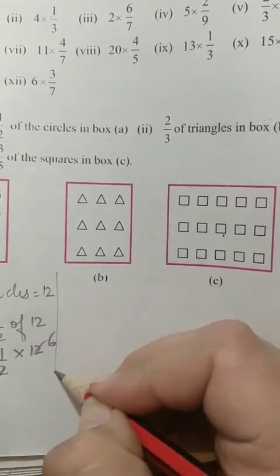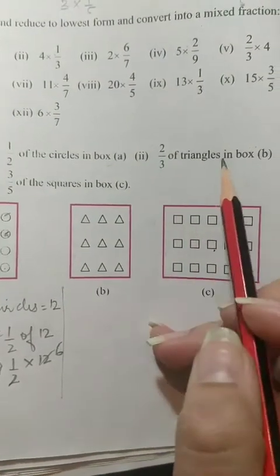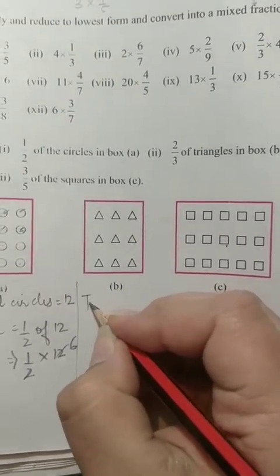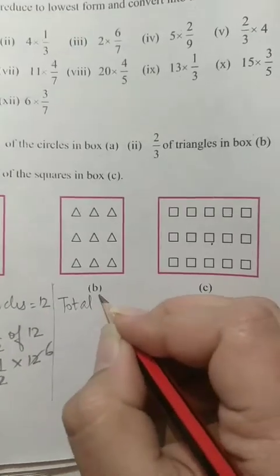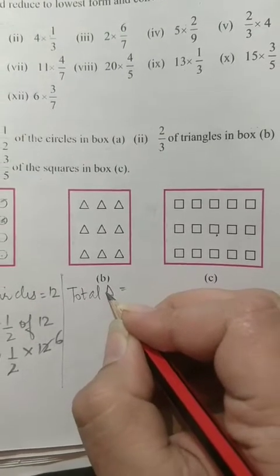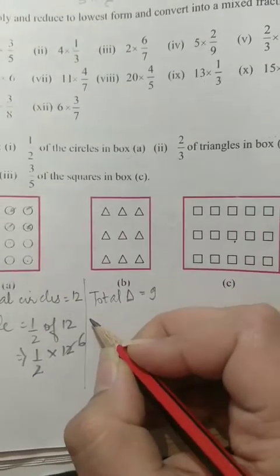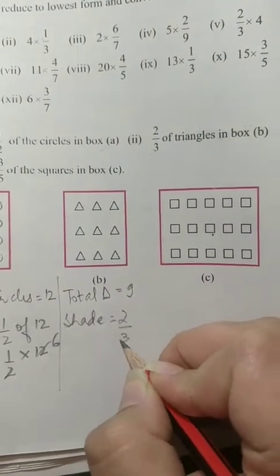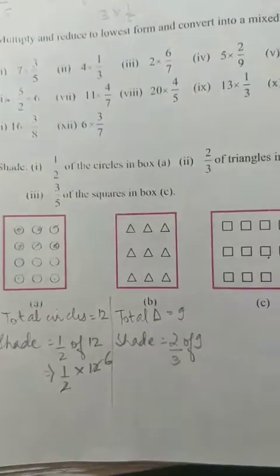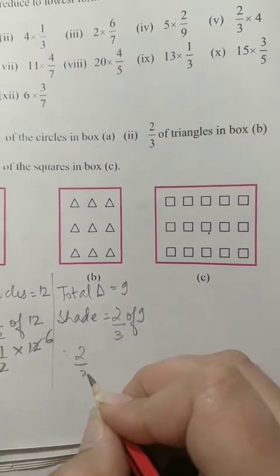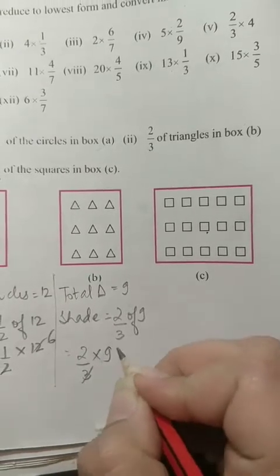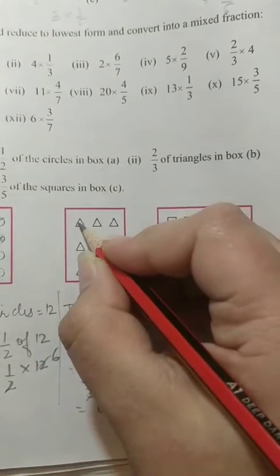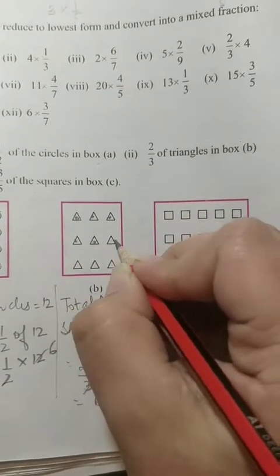Next question: 2 thirds of the circles in the box. 1, 2, 3 और 1, 2, 3 — that means total triangles कितने हैं? 9. Shade कितना करना है हमें? 2 third of 9. ठीक है, इसको हम 2 by 3 into 9 लिख सकते हैं. 3 threes are 9 — cancel out — 3 into 2 is 6. तो हम 6 triangles shade कर देंगे.